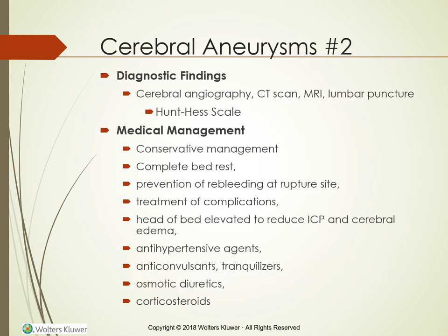To identify cerebral aneurysms, we use cerebral angiography, CT scan, MRI, or lumbar puncture. The Hunt-Hess scale grades the severity: Grade 1 — alert, oriented, asymptomatic; Grade 2 — alert, oriented, with headache or stiff neck; Grade 3 — lethargic or confused with minor focal deficits such as hemiparesis; Grade 4 — stupor with moderate to severe focal deficits such as hemiplegia; Grade 5 — comatose with severe neurologic deficits such as posturing.